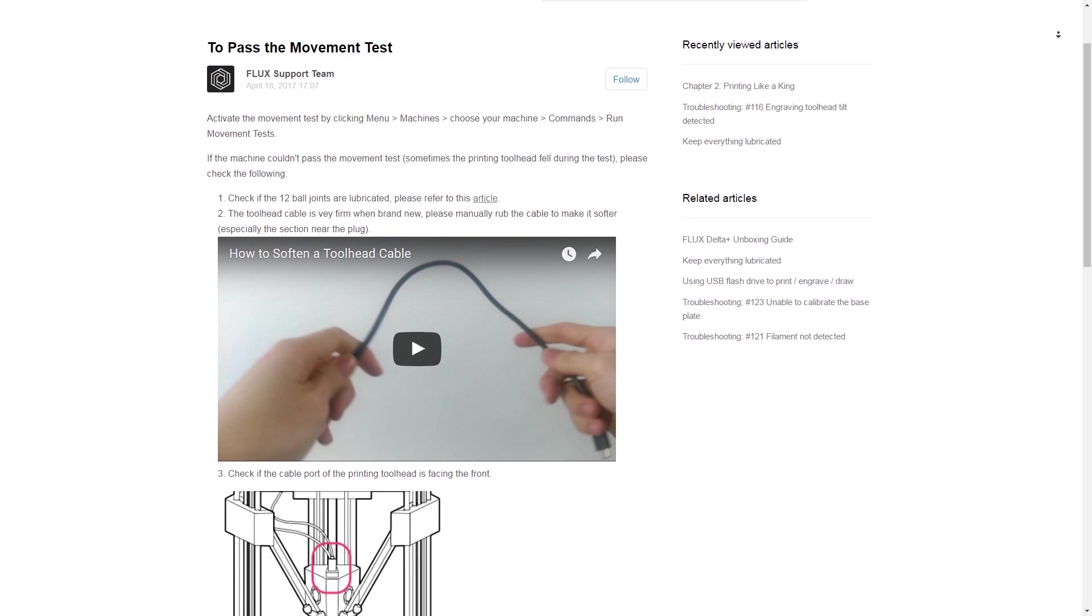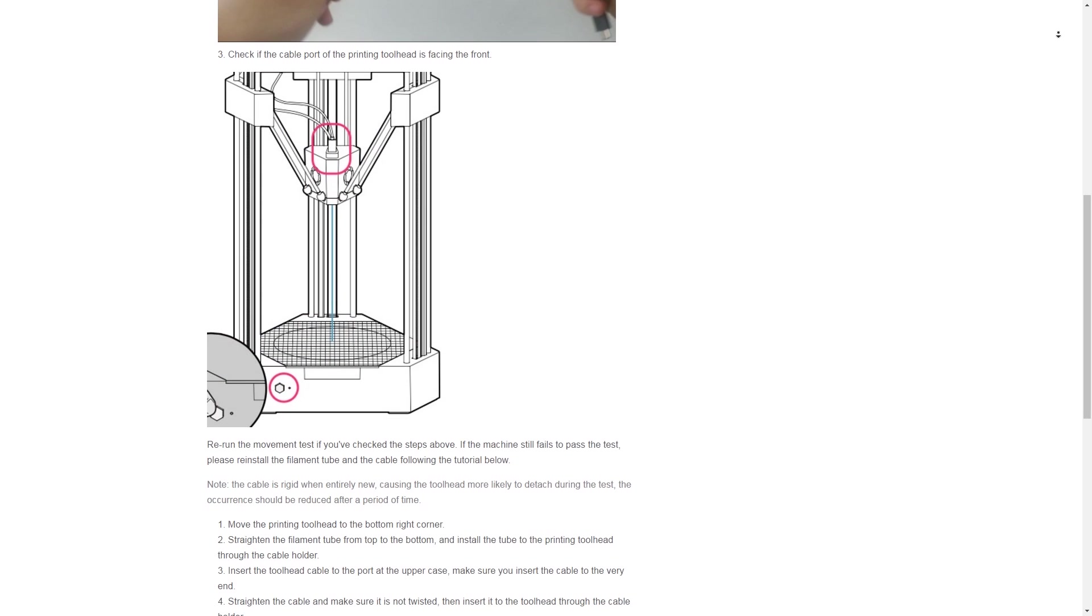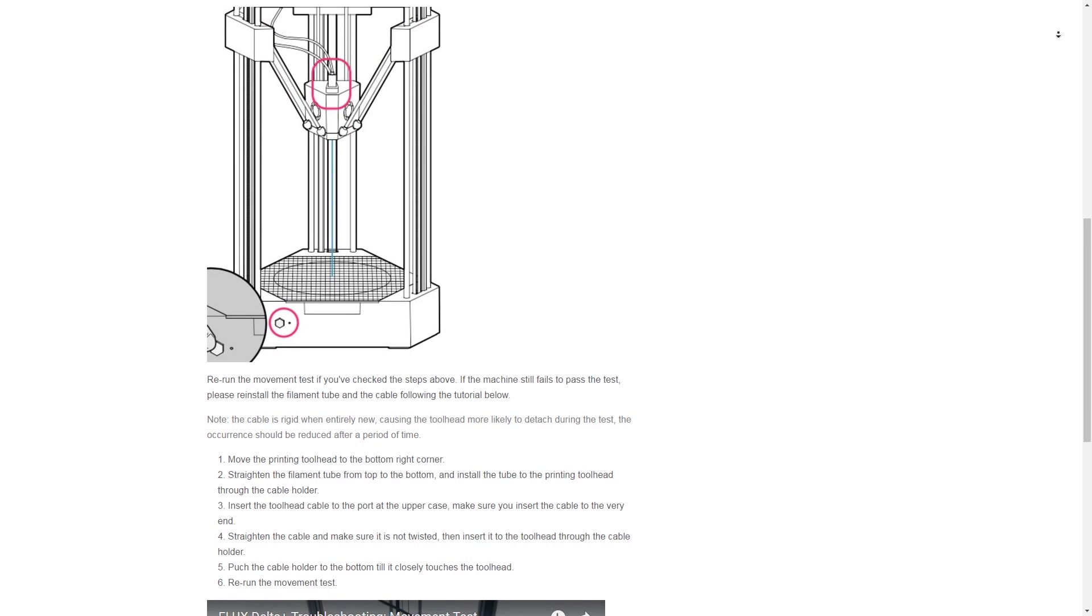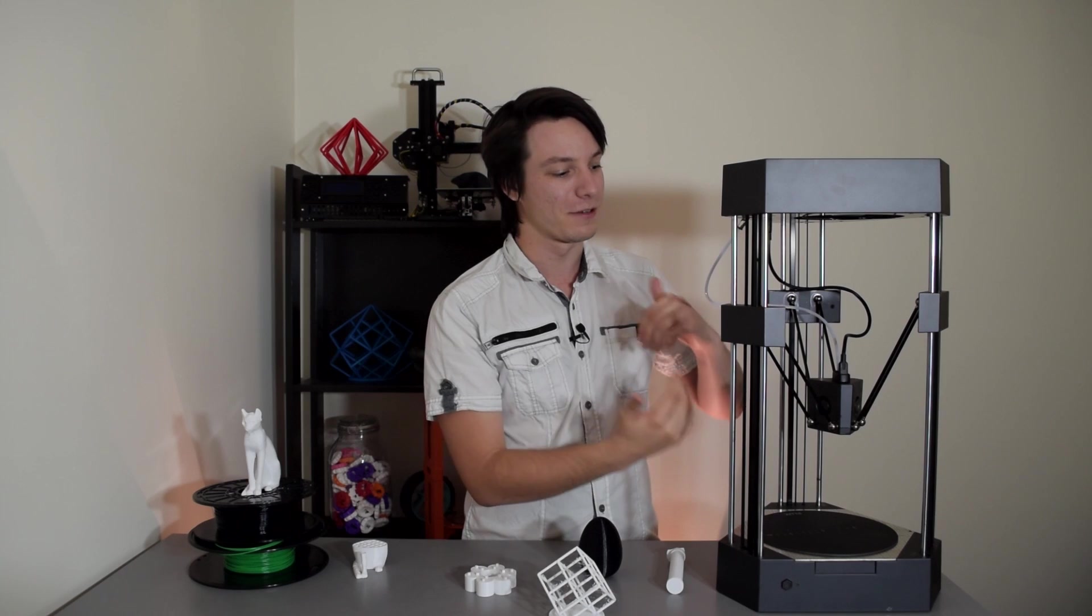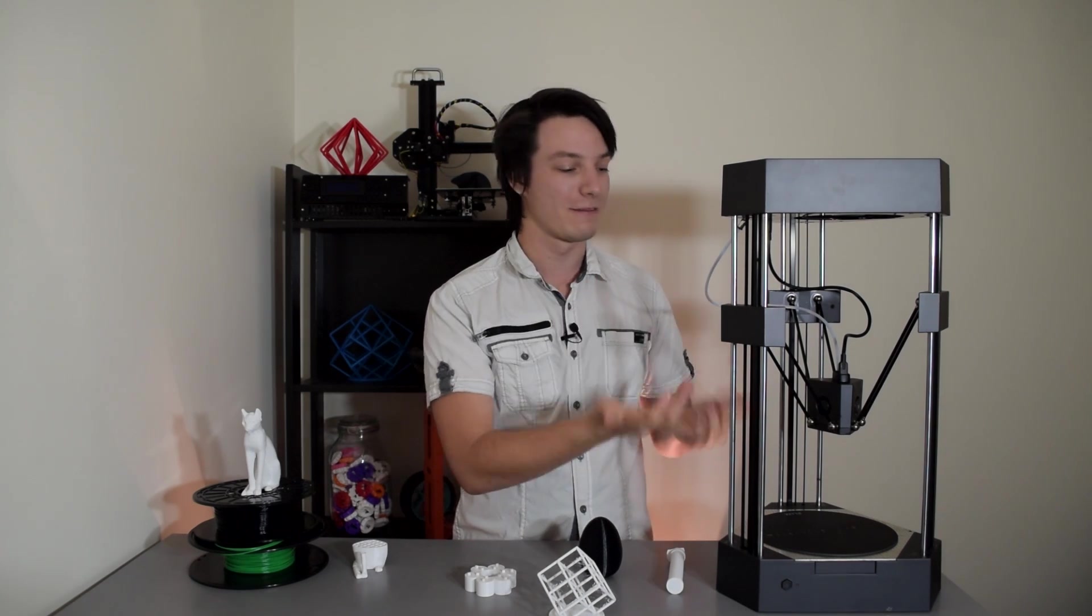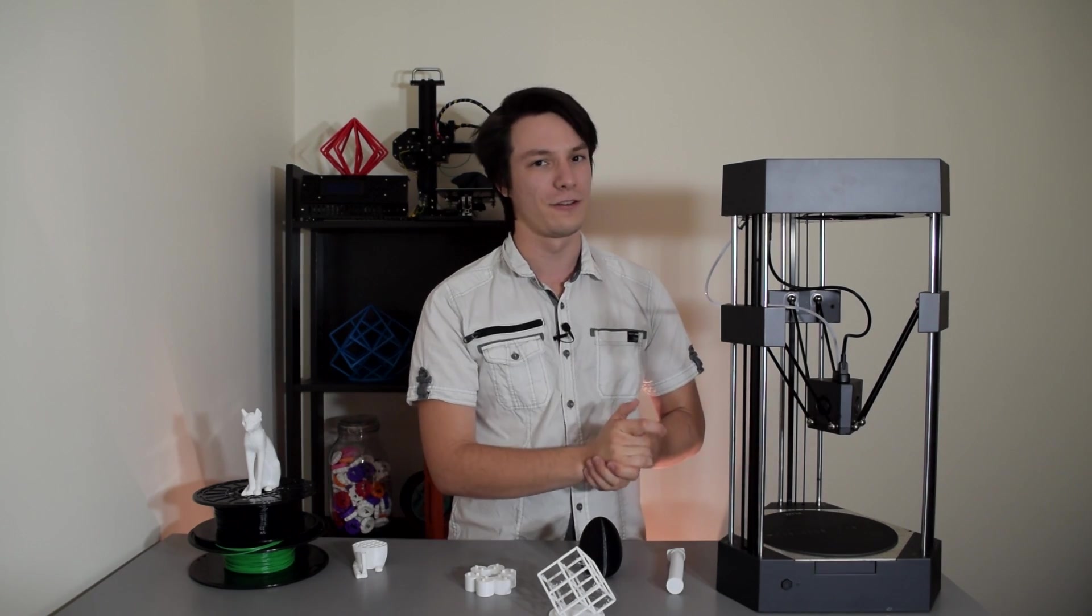Apparently the first batch of cables are very stiff, and you need to sort of loosen them up by hand. Also, they're oriented in a specific way—you can only have them go in one way. After I fixed that, it actually ran the motion test fine, and I've had no further problems.